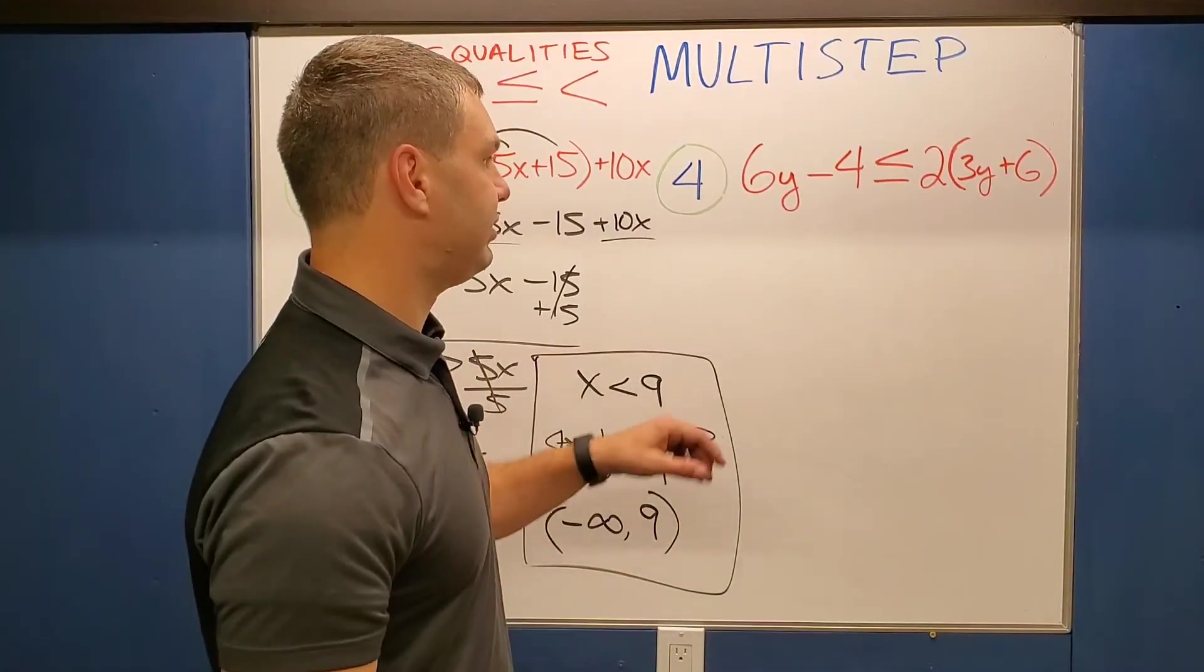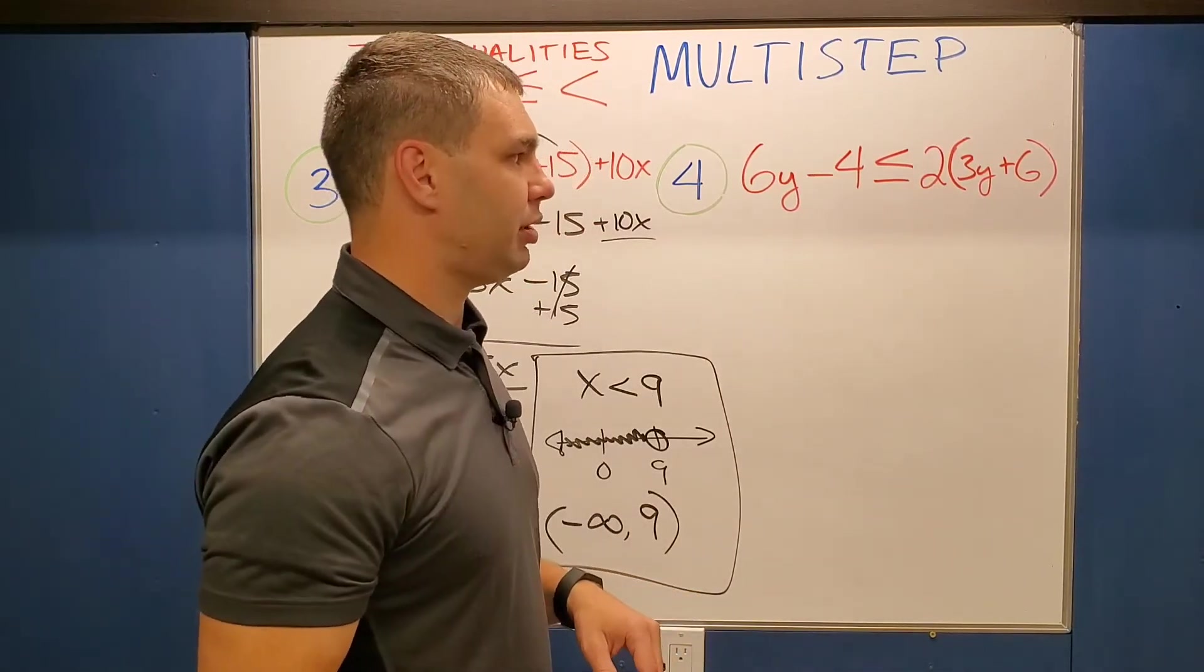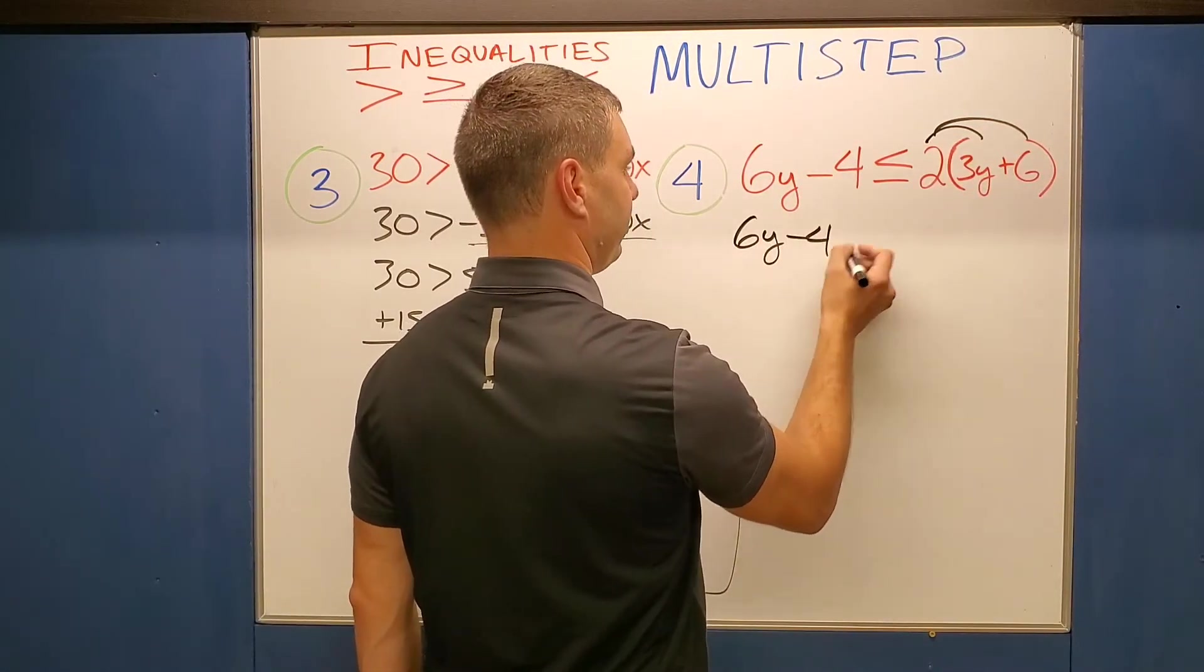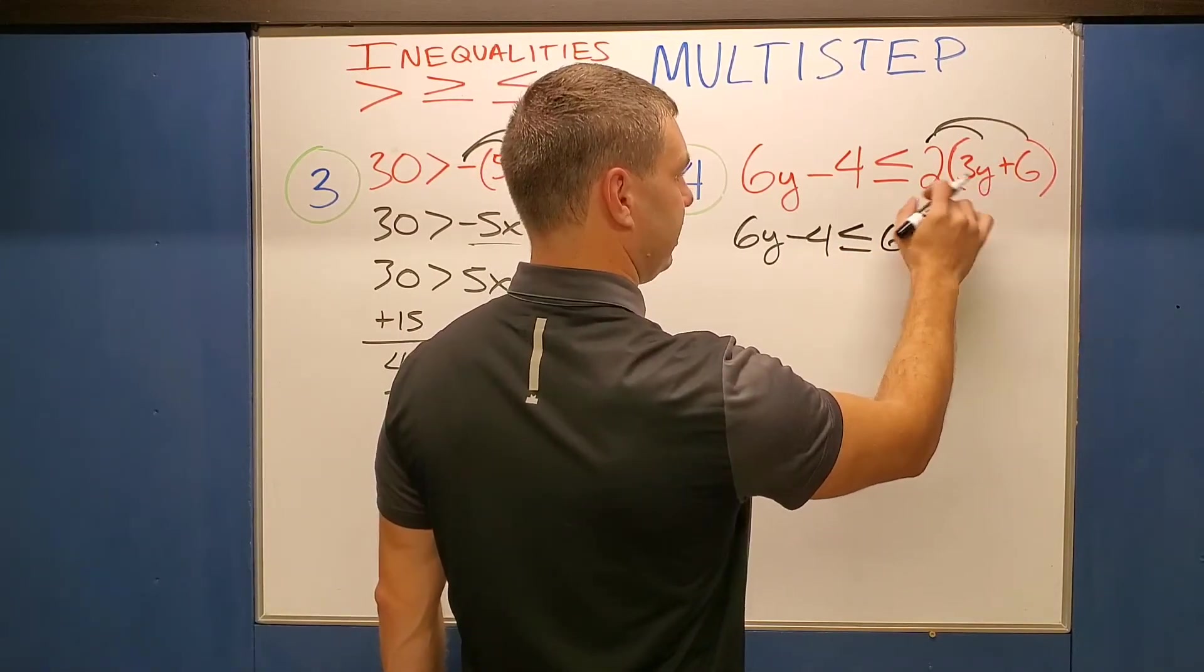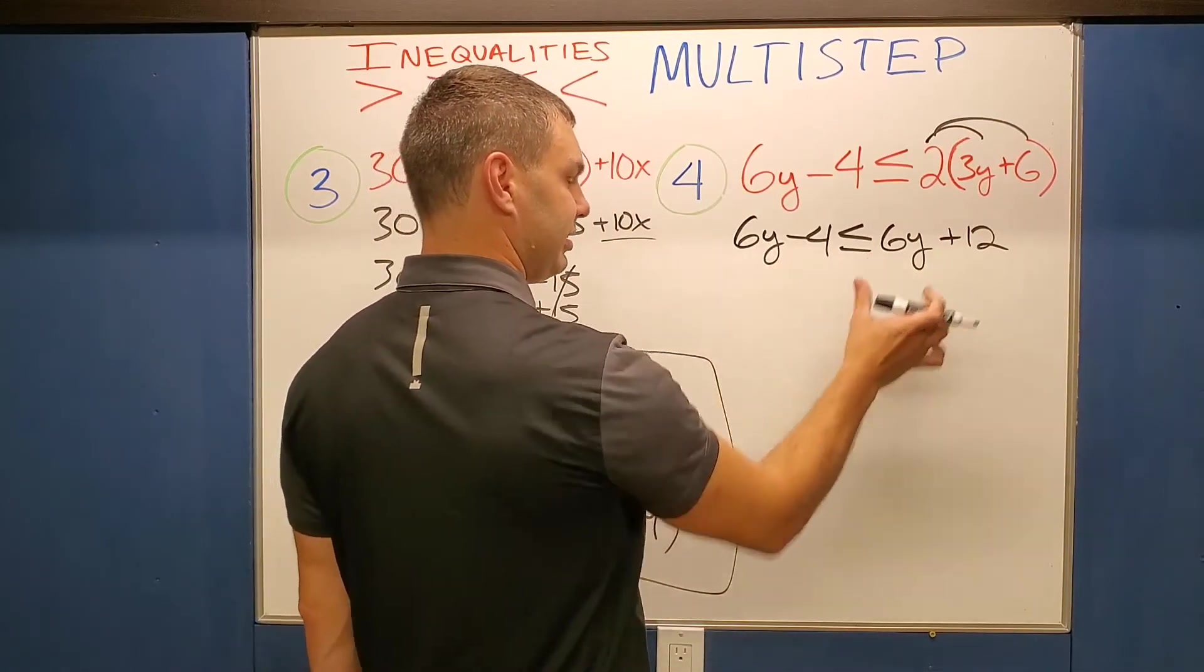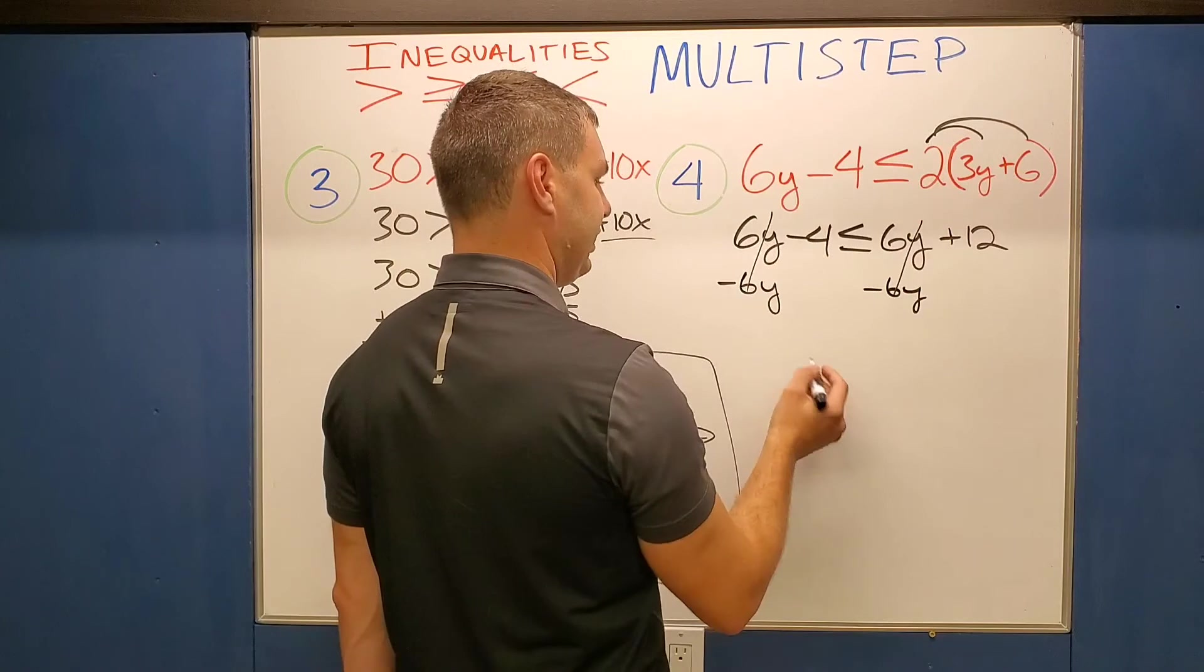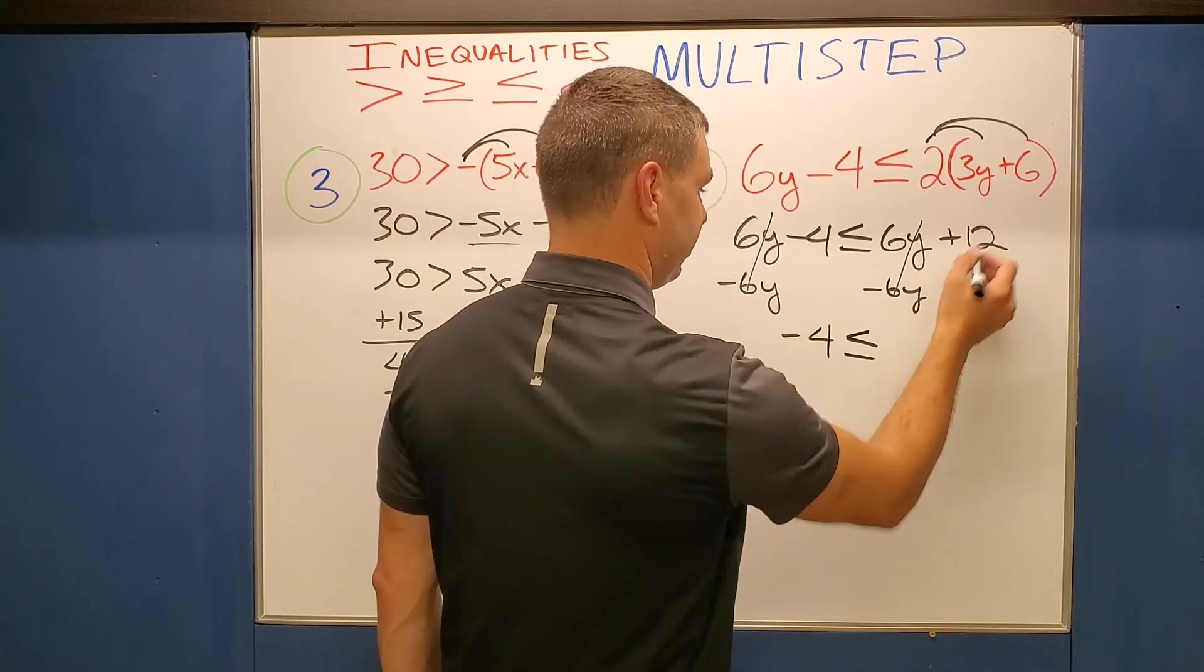Number four, the last one we're doing says 6y minus 4 is less than or equal to 2 times the quantity 3y plus 6. Again, we're going to have to distribute first here. When I distribute the 2 in, this side stays the same. 6y minus 4 is less than or equal to. And now 6y, let's see, 6y plus 12. All right. And let's see, what can I do? Well, both of them are the same. So when I move it over, it doesn't matter if I move my smaller or my bigger one because they're the same, right? But they're both going to cancel. And then you got to be really careful on this one because negative 4 is less than or equal to 12.